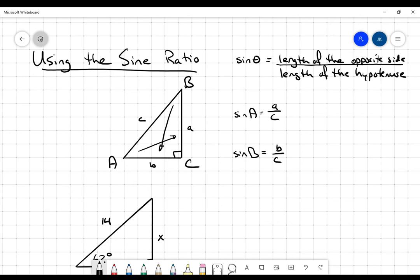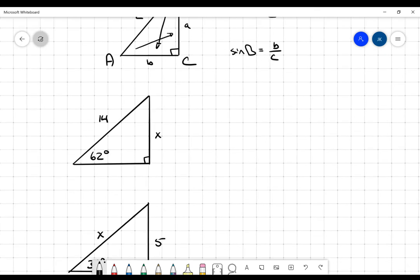So now all I want to do is go through and do some examples and show you really what amounts to the three different kinds of equations you get for sine. So let's take a look at this question right here. I've got an angle, so that's identifying the opposite and the hypotenuse. So I know I'm going to be using sine.